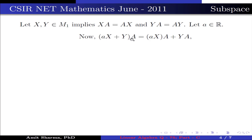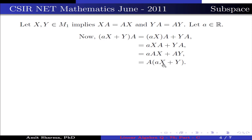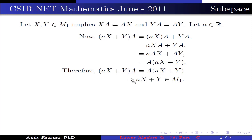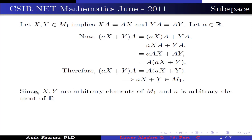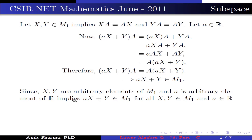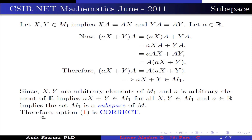Now, (αx + y)A = αxA + yA = α(xA) + yA = α(Ax) + Ay = A(αx + y). Therefore, (αx + y)A = A(αx + y). This implies αx + y belongs to M1. Since x, y are arbitrary elements of M1 and α is an arbitrary element of R, this implies αx + y belongs to M1 for all x, y in M1 and α in R. This implies the set M1 is a subspace of M. Therefore, option 1 is correct.